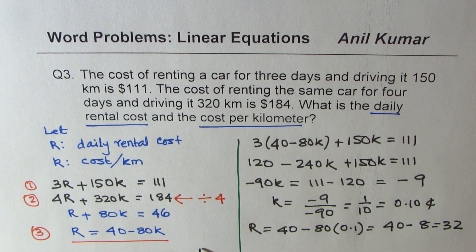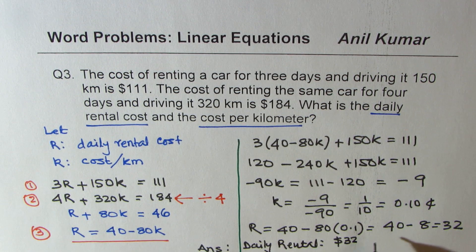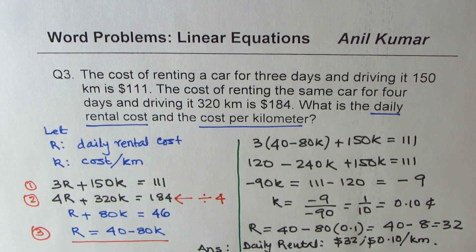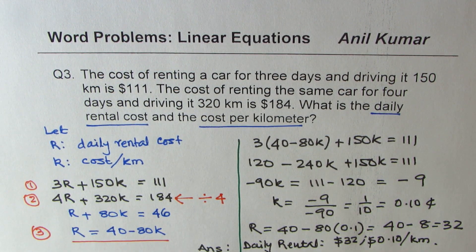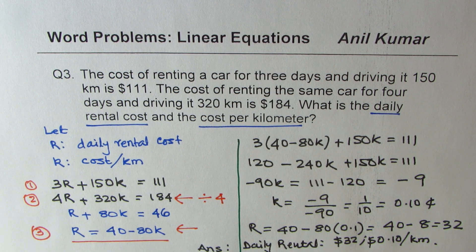So our answer is: daily rental cost is $32 per day, and cost per kilometer is $0.10. That is how you solve such a question. The key steps are: define variables, set up equations, simplify, substitute, and get your answer. Feel free to write your comments and share your views. If you like, subscribe to my videos. Watch more videos on word problems to master the techniques. Thanks for watching and all the best!